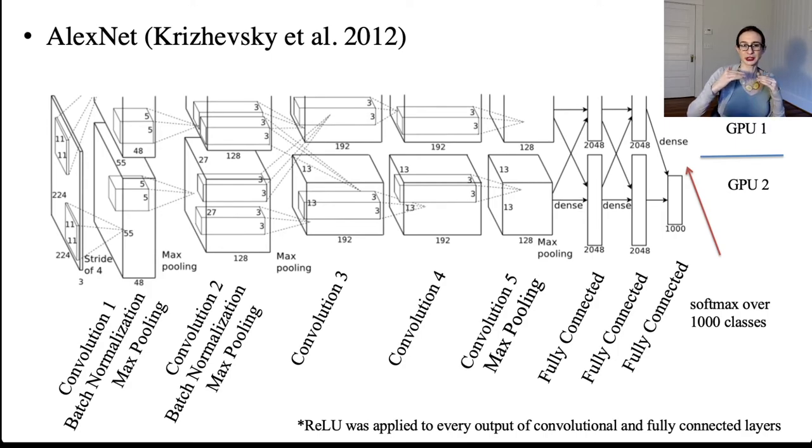So for instance, the fact that there were actually two GPUs, they both had the same repeated architecture. And then you can see that there's all this batch normalization, max pooling between the different layers. And the fact that they use ReLU as well.